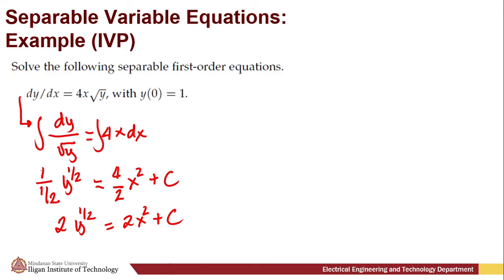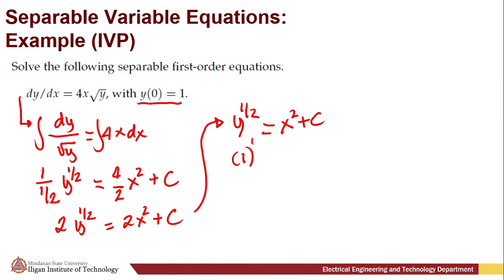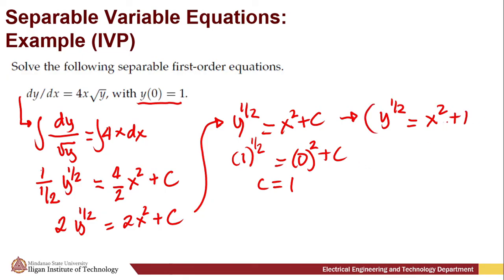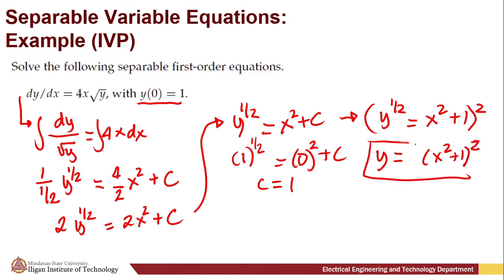Simplifying, we get 2y^(1/2) = 2x² + c. Dividing all terms by 2, we have y^(1/2) = x² + c. To find the arbitrary constant c, we apply the initial condition y(0) = 1: 1^(1/2) = 0² + c, so c = 1. Thus y^(1/2) = x² + 1. Squaring both sides, our explicit particular solution is y = (x² + 1)².